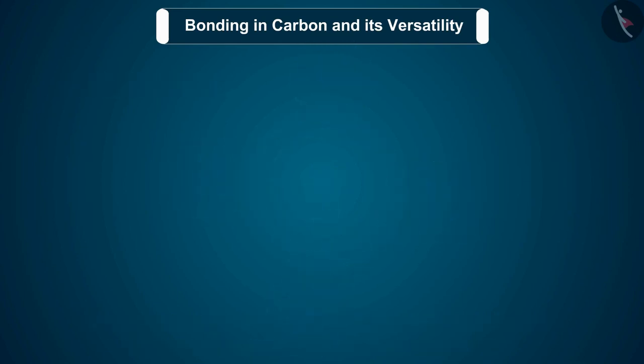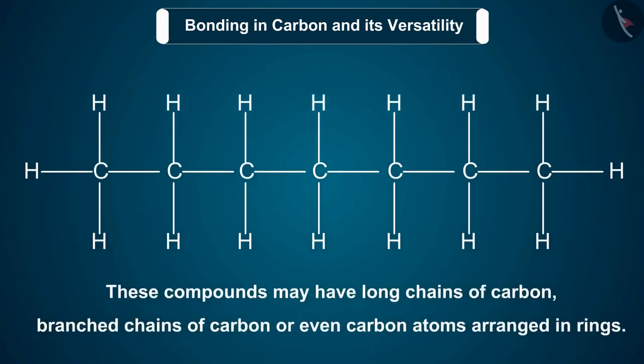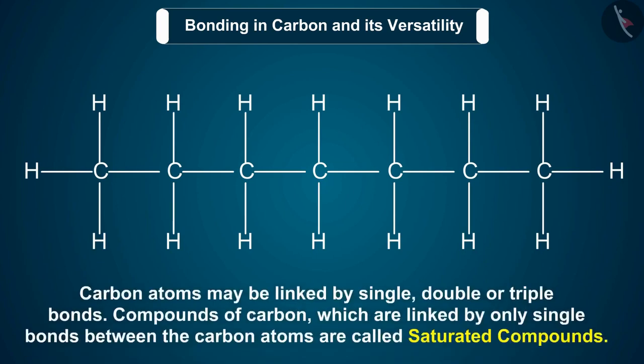Two factors noticed in the case of carbon are: Carbon has the unique ability to form bonds with other atoms of carbon, giving rise to large molecules. This property is called catenation. These compounds may have long chains of carbon, branched chains of carbon, or even carbon atoms arranged in rings. In addition, carbon atoms may be linked by single, double, or triple bonds.